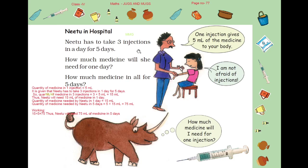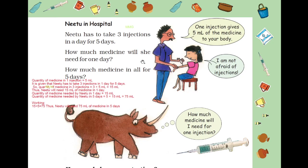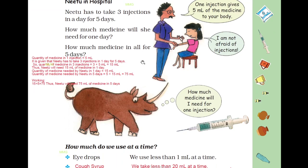Now, the quantity of medicine needed by Neetu in 5 days — she has to take for 5 days. So, quantity of medicine needed by Neetu in 5 days will be 5 times 15 ml, and the answer will be 75 ml. So, she has to take 75 ml of medicine in 5 days.